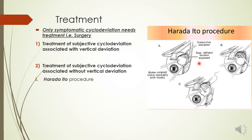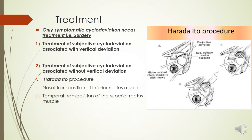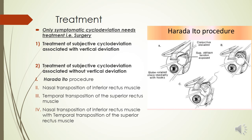Other surgical options include nasal transposition of the inferior rectus — moving the inferior rectus slightly nasally — or temporal transposition of the superior rectus — detaching the superior rectus from its insertion and reinserting it slightly temporal. When the amount of intorsion or extorsion is very large, nasal transposition of the inferior rectus combined with temporal transposition of the superior rectus is performed, with the degree of transposition calibrated accordingly.